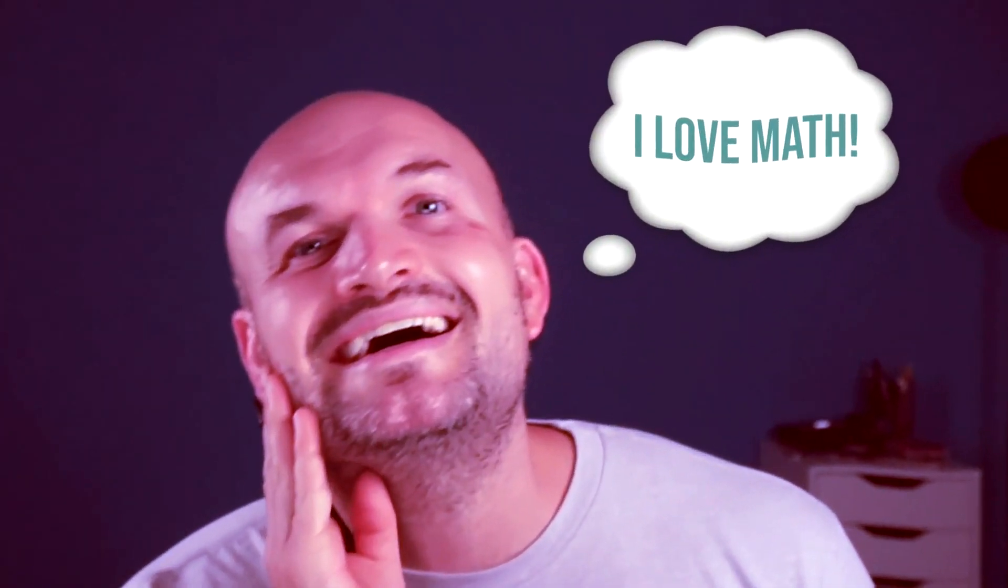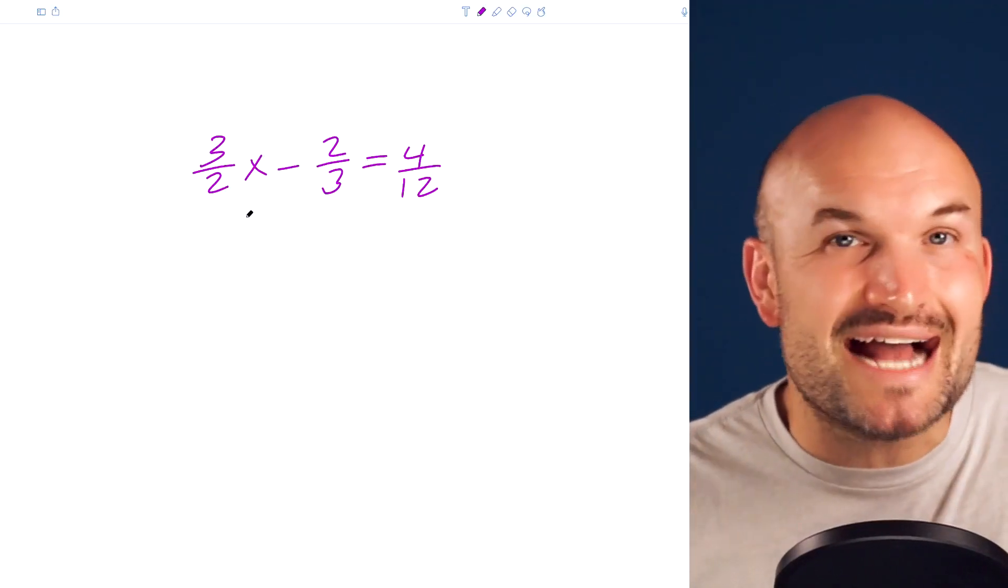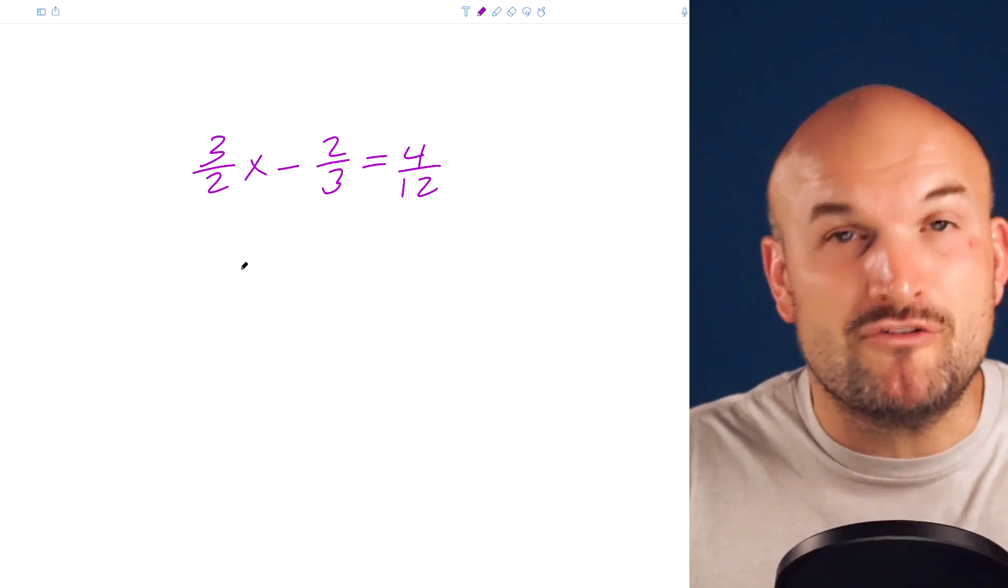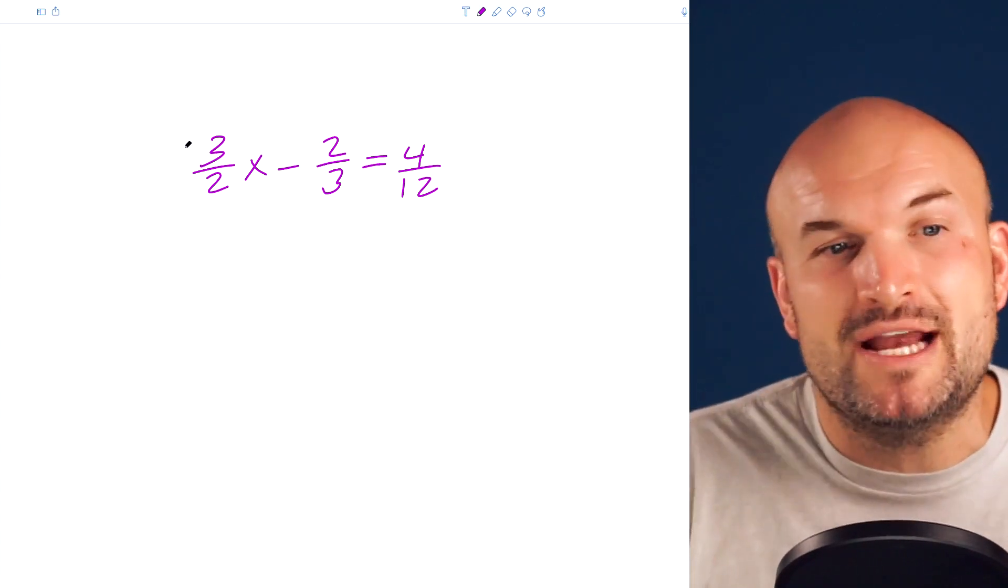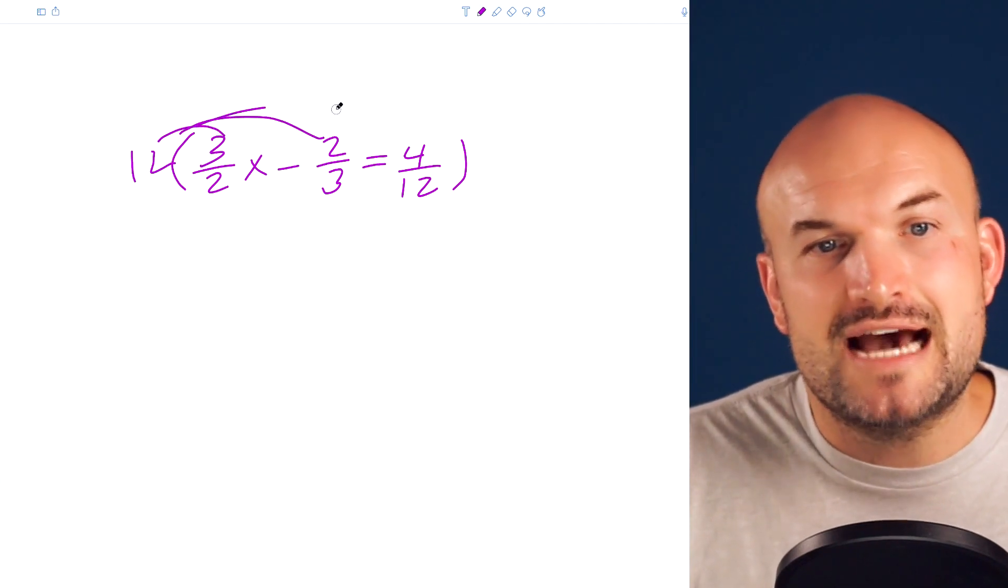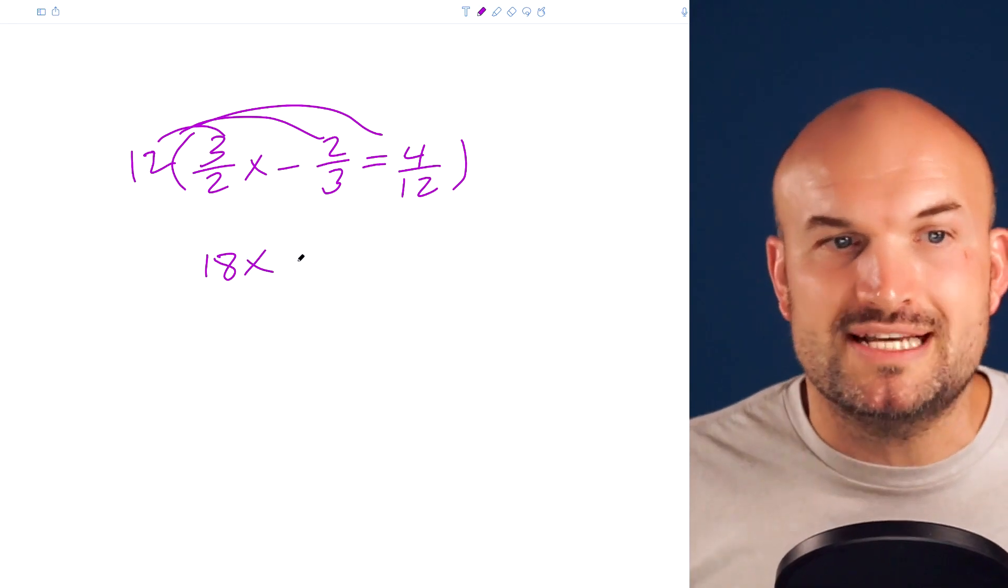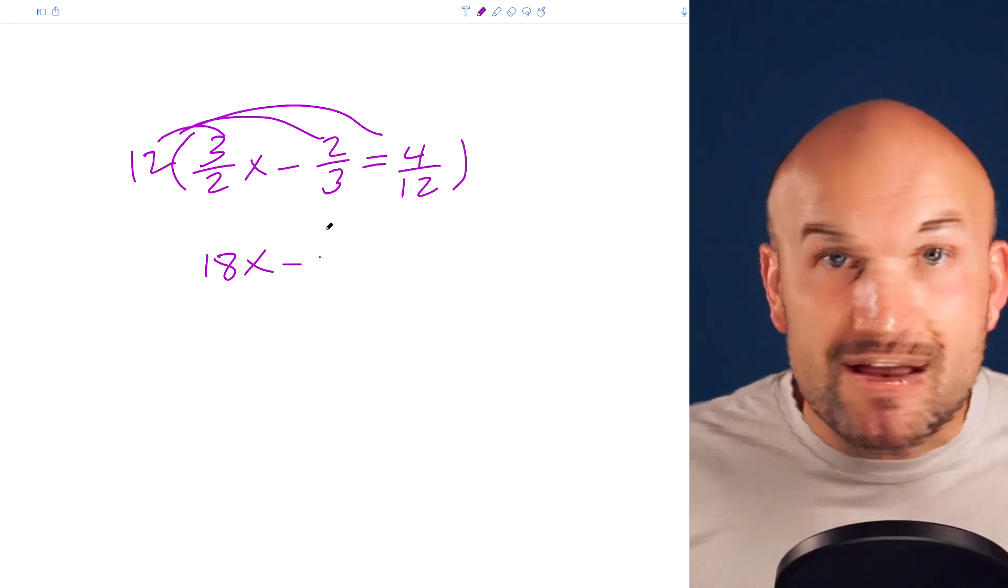So again, if we can spend a quick little second going back to memory lane, when we had an equation with fractions just like this, one of the ways that we could solve for x would be to first eliminate our fractions. And to do that, we would multiply by our LCD. But it was very important that we needed to multiply everything times this LCD to get rid of the fractions.